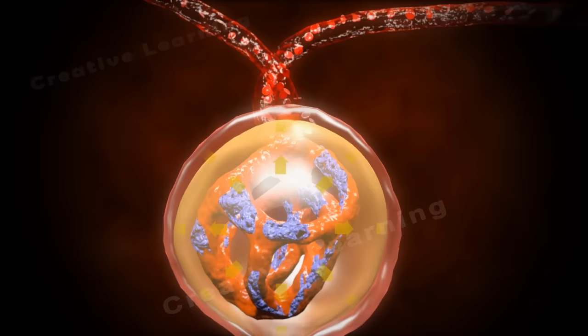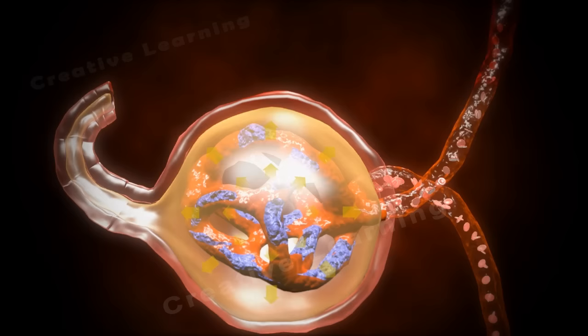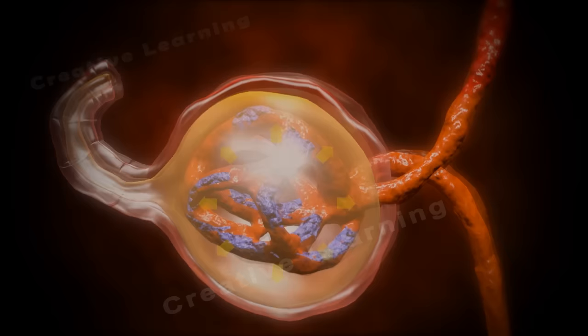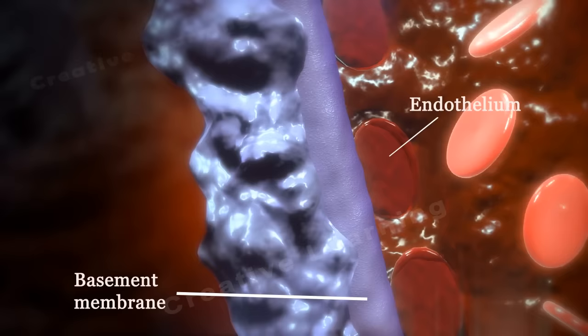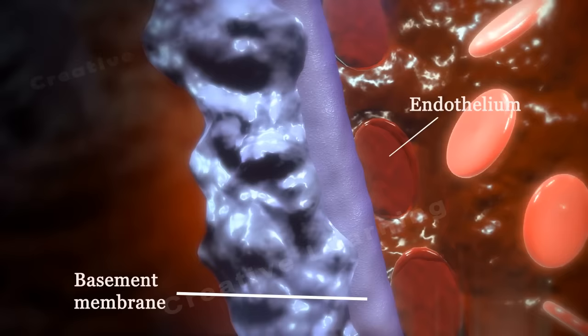As blood travels through the capillaries of the glomerulus, filtration causes a lot of plasma contents to spill out into Bowman's space through the glomerular filtration membrane. It consists of three layers: the capillary endothelium, basement membrane, and epithelial podocytes. This membrane allows some particles of blood to pass through, but not all. The fluid filtered from the capillary blood into Bowman's space is called filtrate and forms the primary urine.